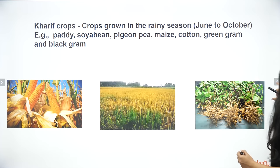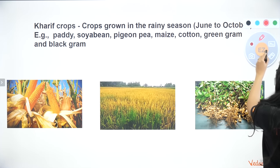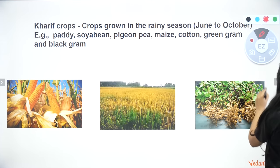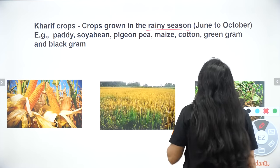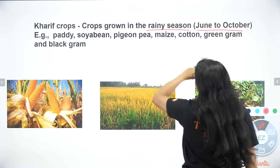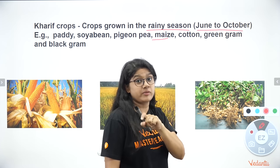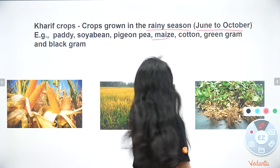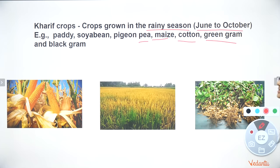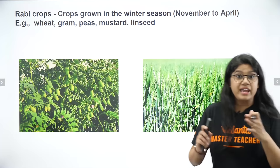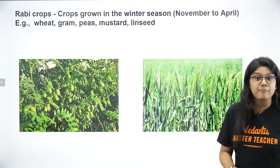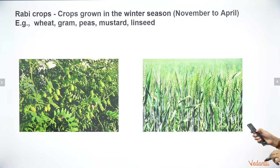Take a screenshot — this is very important. Kharif crops are grown in the rainy season, June to October; examples include maize, pea, coconut, and green gram. Rabi crops are grown in the winter season, November to April; examples include wheat, gram, and peas.